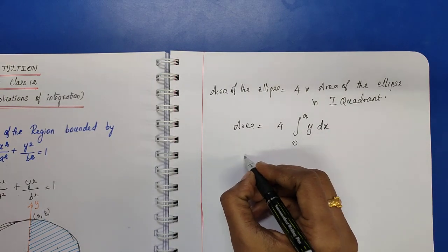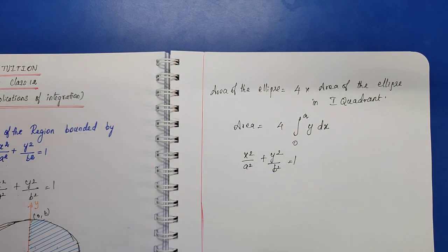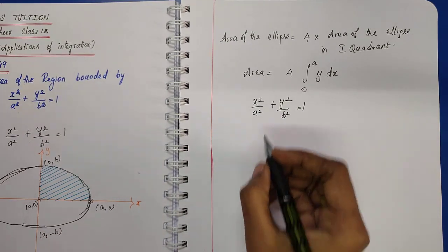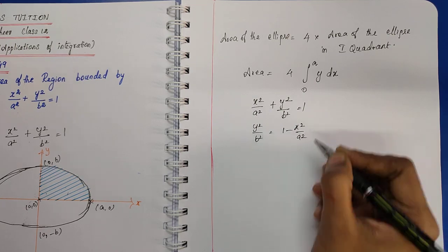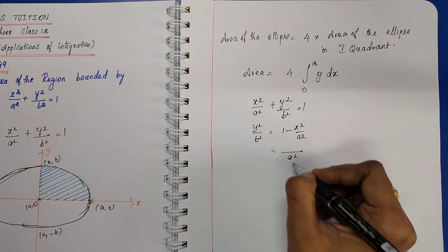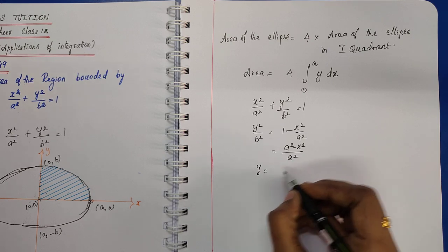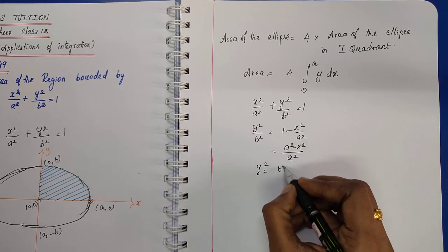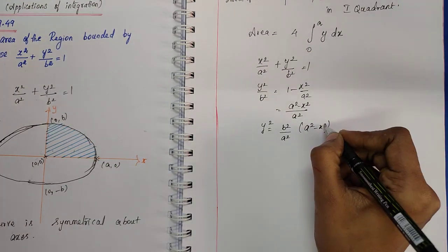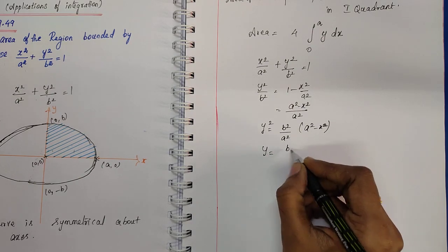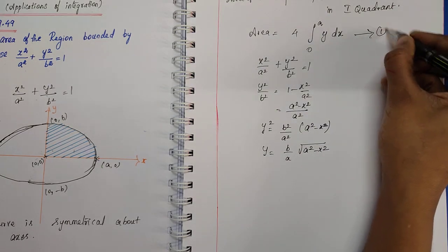First, we calculate y from the given equation. From x²/a² + y²/b² = 1, we get y²/b² = 1 − x²/a², so y² = b²/a² × (a² − x²). Therefore y = (b/a)√(a² − x²). This is equation number 1.